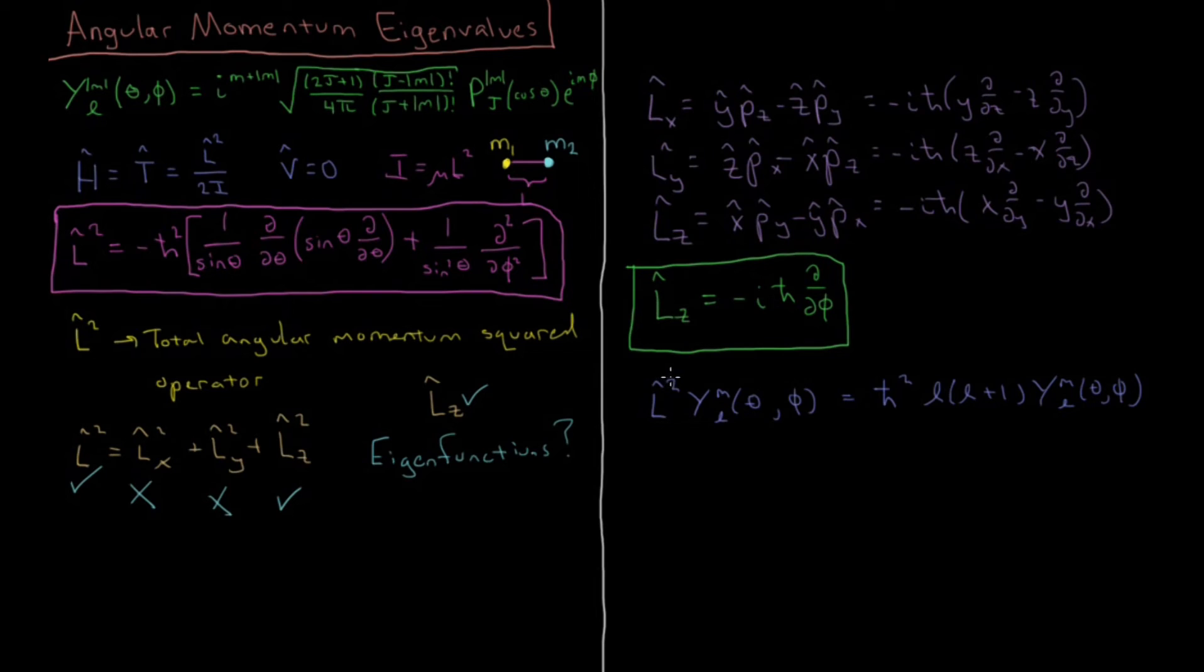times Y L M of theta and phi. So that's an eigenvalue equation. An operator times a function equals a constant times that function back. So the eigenvalues of L squared are H bar squared L times L plus 1. And you'll notice this, if you were to divide it by 2 times I, is actually the total energy for the rigid rotor. Because this angular momentum squared divided by 2i is the total Hamiltonian,